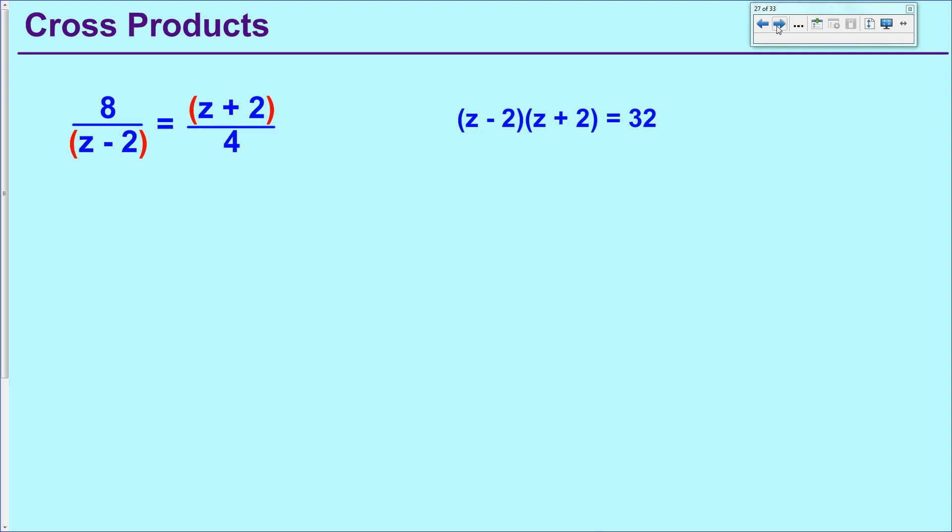Now, if you're clever enough, you'll notice that that's actually a special case. You have Z minus 2 and Z plus 2. So you can either foil it like this, or you can immediately notice that the plus 2Z and the minus 2Z are going to cancel out and you get that special case binomial situation where you have Z squared minus 4 equals 32. So add 4 to both sides, take a square root.